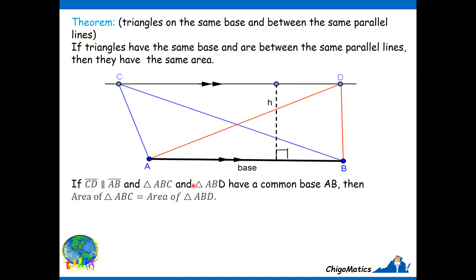So in simple, we simply write: if CD is parallel to AB, and triangle ABC and triangle ABD have a common base that is AB...